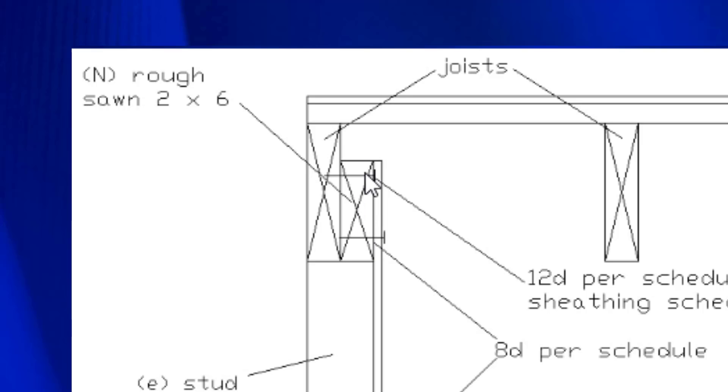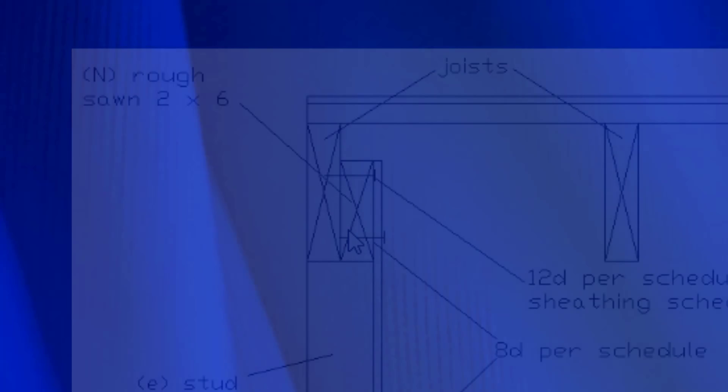We take that block and nail it into our end joist with twelve-penny nails. Remember, twelve-penny nails are three and a quarter inches long, so you get the penetration you need. Then we put our plywood in and nail the plywood to the block, and we're all set.